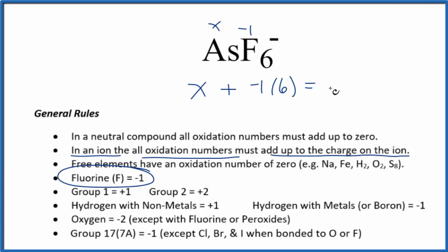We could just say X plus minus one times six equals the charge on the ion. So we're going to have a negative one.